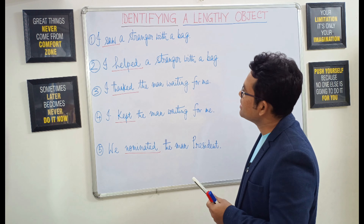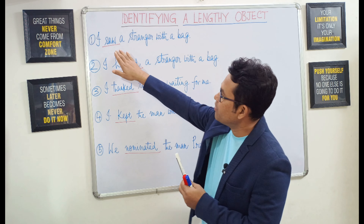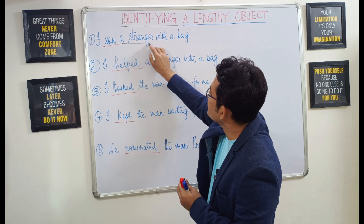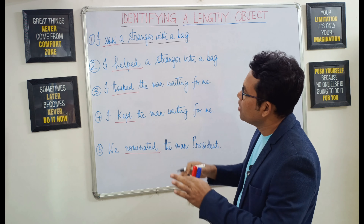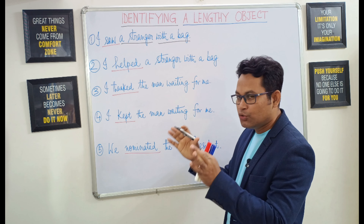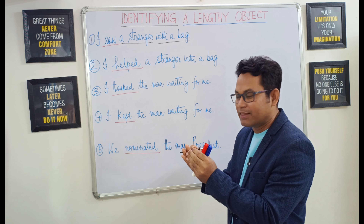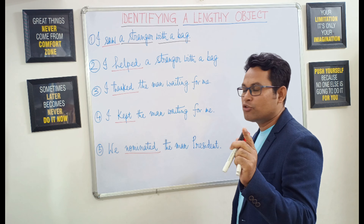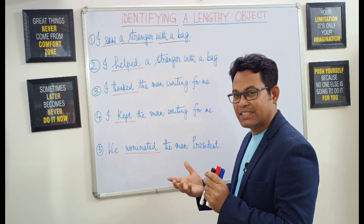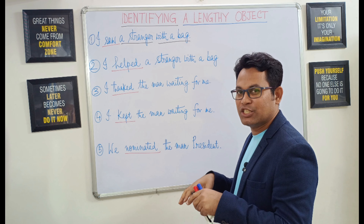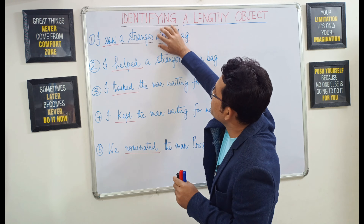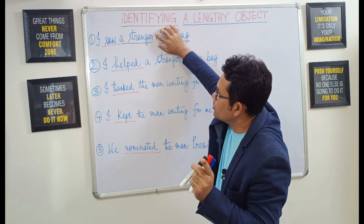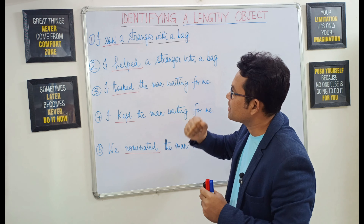Example number one: I saw a stranger with a bag. After the verb 'saw,' we are getting two units: 'a stranger' and 'with a bag.' Should the two units be kept together or kept separated? In order to find that answer, we can apply this simple rule. Let's imagine 'with a bag' is absent. 'I saw a stranger' — it makes sense, so 'a stranger' could be the object.